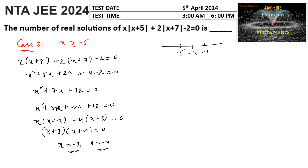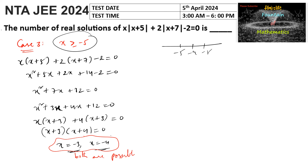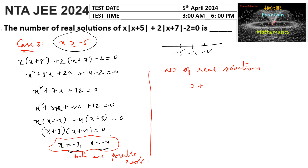Both roots x equals negative 3 and x equals negative 4 lie within the region x greater than or equal to negative 5, so both are valid. Finally, the number of real solutions: Case 1 gives 0, Case 2 gives 1, and Case 3 gives 2. Total: 0 plus 1 plus 2 equals 3 solutions.